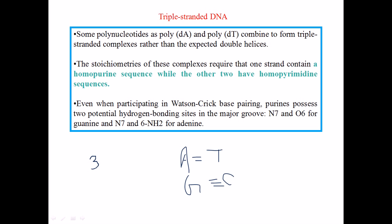In Hoogsteen pairing, three nucleotide bases can bond with each other. For example, one adenine can bond with two thymines — this is called Hoogsteen pairing, which was not discovered by Watson and Crick. It is also possible to have one guanine bonding with two cytosines, also an example of Hoogsteen pairing. This gives DNA the degree of freedom to form triple-stranded structures.